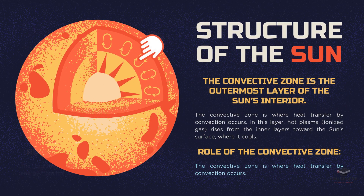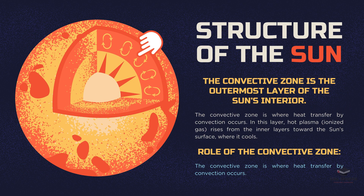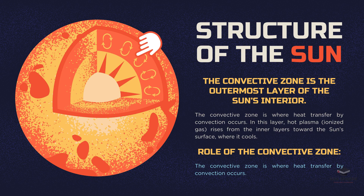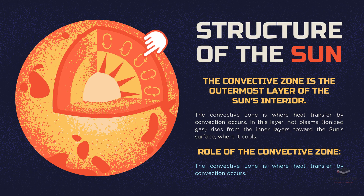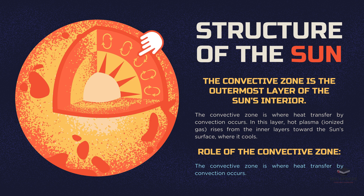Above the radiative zone lies the convective zone. Here, heat transfer occurs through convection. Hot plasma, which is ionized gas, rises from the inner layers towards the Sun's surface, cools, and then sinks back down, creating huge convection currents. This convective motion is a crucial mechanism for energy redistribution within the Sun.